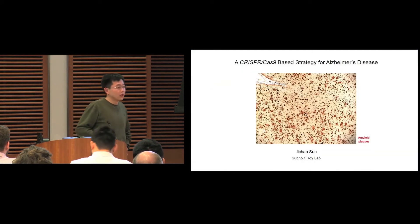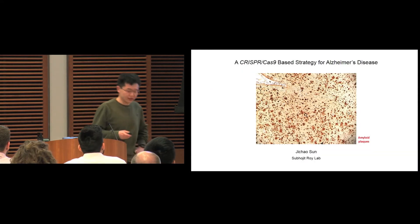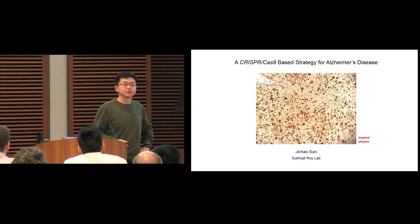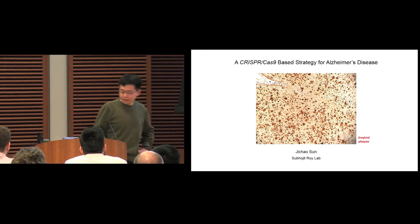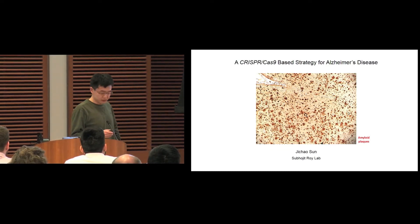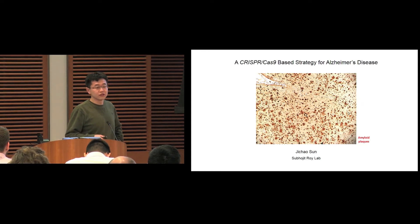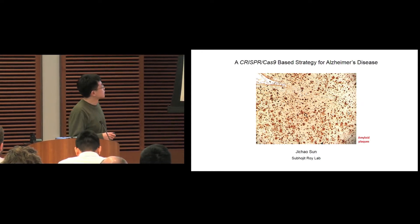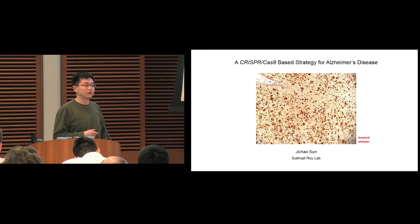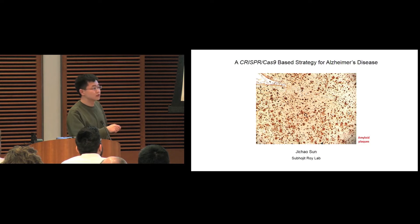Good afternoon everyone, I'm Ji Chao from Subhajit Roy's lab. It's my pleasure to present our recent work on a CRISPR-Cas9-based strategy for Alzheimer's disease. This picture shows amyloid beta staining of Alzheimer's disease brain. The brown structure you see is the amyloid plaques, which are the pathological hallmarks of Alzheimer's disease.